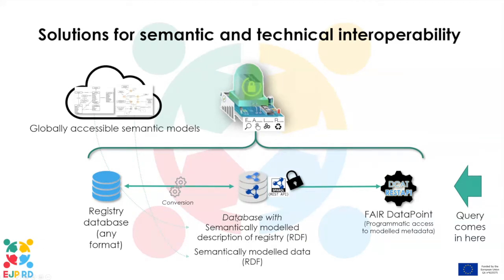To the right of the original database, you see what we call a database with the semantically modeled information or description of the registry — just about the whole thing. Below that is the semantically modeled data in terms of global ontologies, shown in a cloud on the left, meaning it's a reference anyone can use. There are models for describing catalogs and whole resources, and models for describing actual data elements. We relate these different data elements to one another — this model can have elements pointing to different databases, and that's how interoperability works. The model connects things, not the data being in one place.